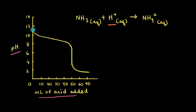As we add acid to our aqueous solution of ammonia, from our net ionic equation, ammonia reacts with H+ to form the ammonium cation NH4+. Looking at the titration curve, as we add more and more acid the pH starts to decrease, but in this range there is a slow decrease in pH. As more acid is added, more ammonia is converted into the ammonium cation.